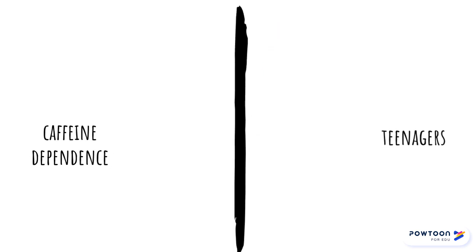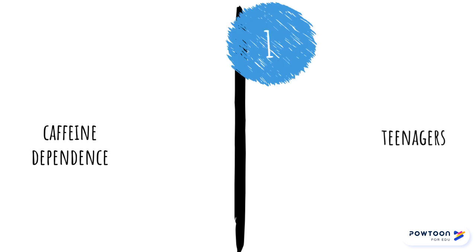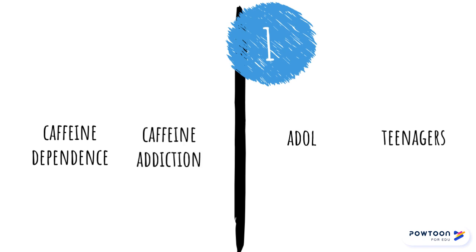After you have basic keywords, you can develop others. One way is to look for synonyms. Addiction is a synonym for dependence, so we'll add caffeine addiction to our keyword list. Adolescence is a synonym for teenagers, so let's add that one as well.